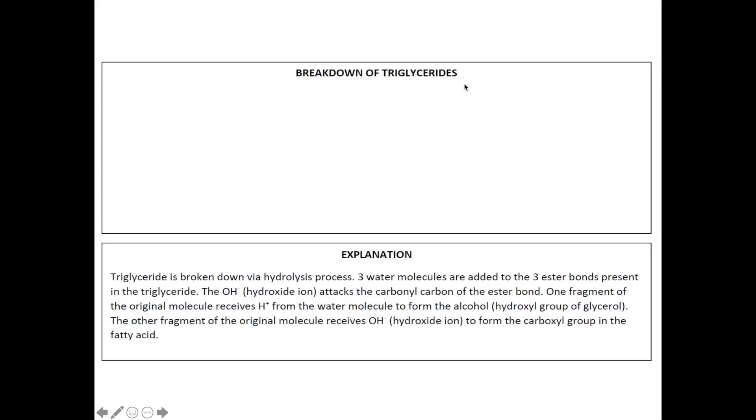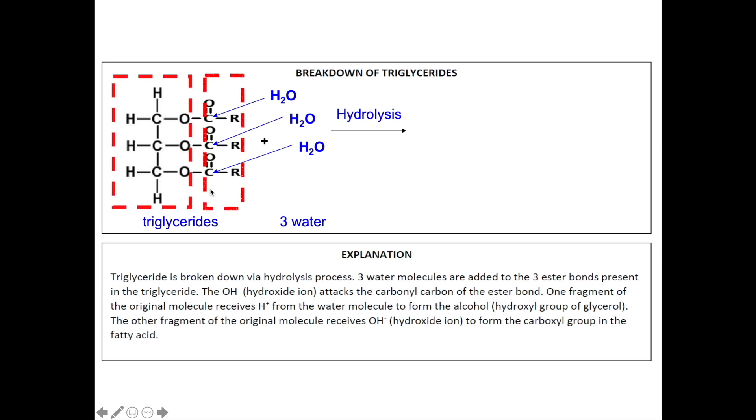As for the breakdown of triglycerides, it requires a slightly more detailed explanation. Triglyceride is broken down via the process of hydrolysis. During this process, three water molecules are added to the three ester bonds which are present in the triglycerides. The hydroxide ion, OH-, from water attacks the carbonyl carbon of the ester bond causing the triglycerides to split into two fragments. One fragment will receive hydrogen ion from water molecule to form the hydroxyl group of the glycerol, thus producing glycerol. The other fragment will receive hydroxide ion from water molecules to reform the carboxyl group in the fatty acid.